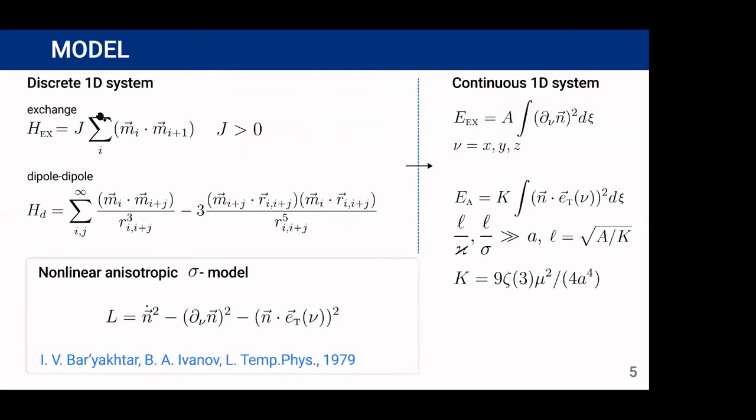In the system we consider the nearest neighbor Heisenberg exchange interaction with exchange integral J, which is positive, and magnetic dipole-dipole interaction. In the approximation of continuous media, the following macroscopic energy corresponds to the exchange Hamiltonian, whereas magnetic dipole-dipole interaction can be reduced to the hard tangential anisotropy, which can be determined by the curvature and torsion. This approximation works for wires whose characteristic curvature and torsion radius are much larger than the distance between the magnetic moments.